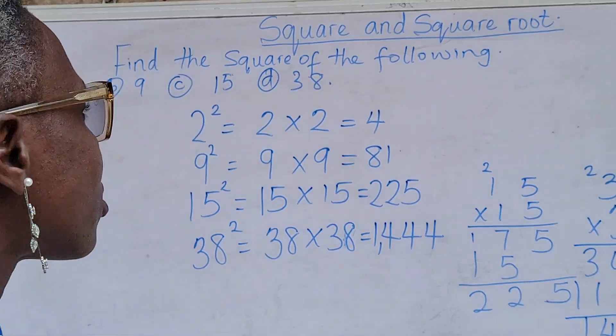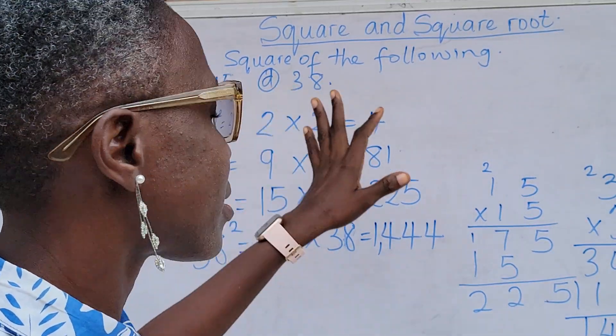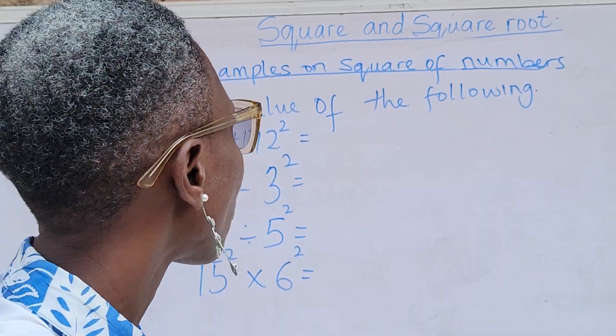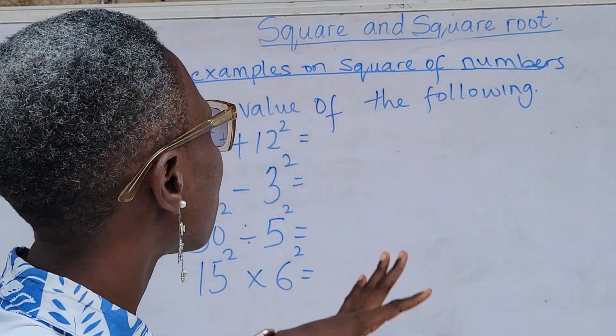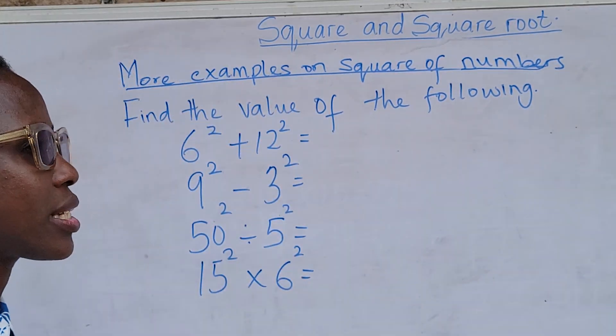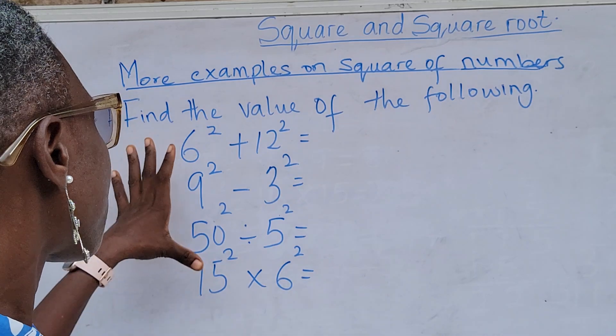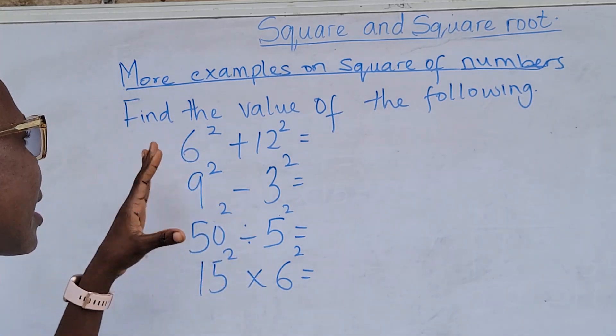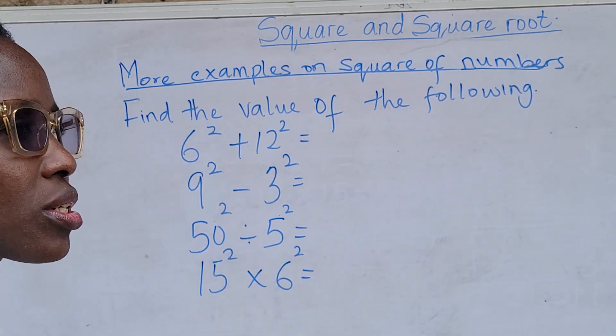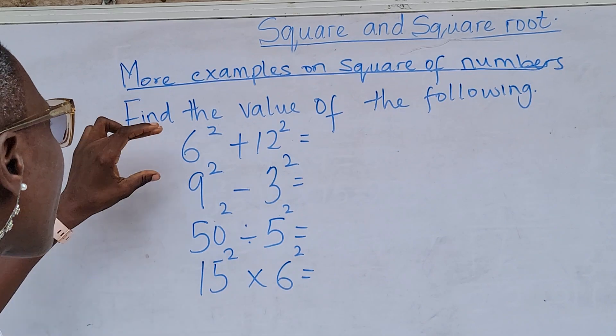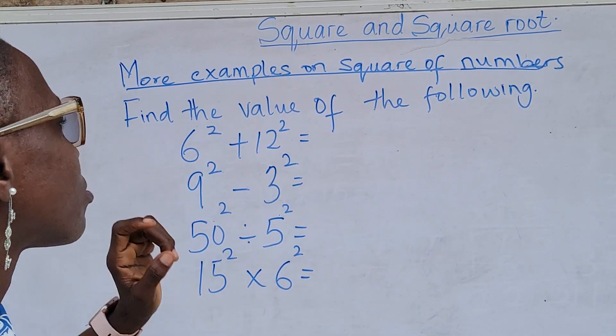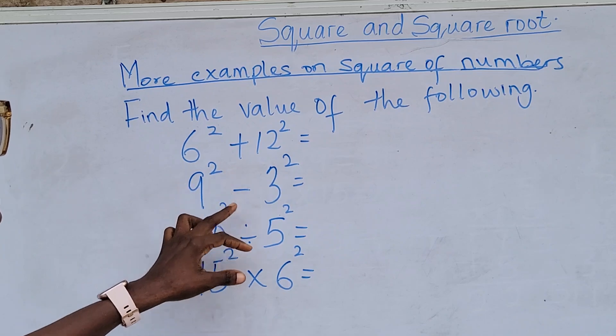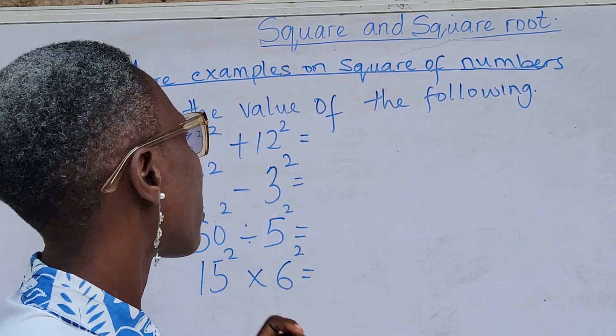You have been able to find all the squares of the numbers on the board. So, we are done with that. I am bringing in more examples on squares of numbers. It can be given to you as operations like this. You can see the 4 basic operations in mathematics. Where we have 6² + 12² and 9² - 3².